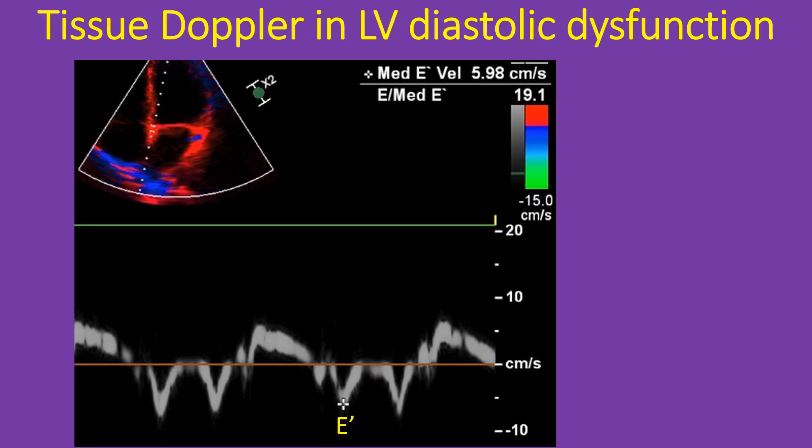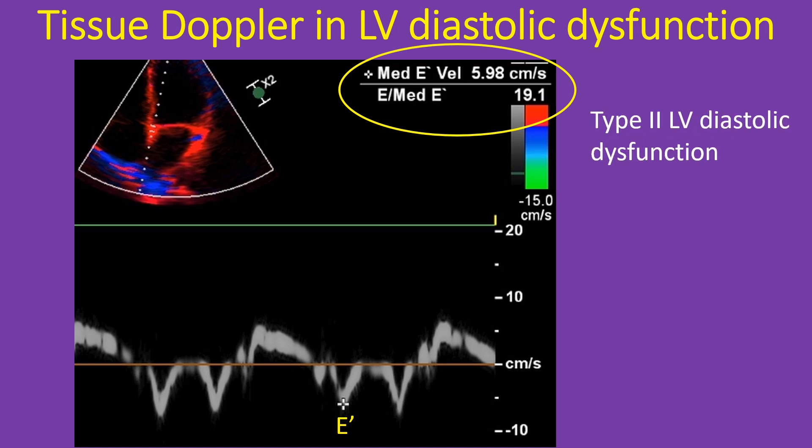Tissue Doppler image with colour kinesis in the inset. E by E prime of the medial mitral annulus is shown as 19.1, indicating type 2 left ventricular diastolic dysfunction. In diastolic dysfunction, as the relaxation of the ventricle is impaired, the velocity of the medial mitral annulus is reduced so that the E by E prime ratio is increased.